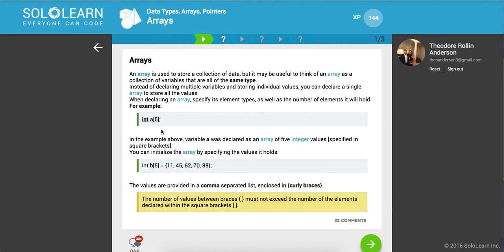So let's get started. An array is a data structure used to store data. It may be useful to think of an array as a collection of variables that are all the same type, as opposed to JavaScript. In JavaScript your array can store any sort of data type, but in C++ that's not the case.